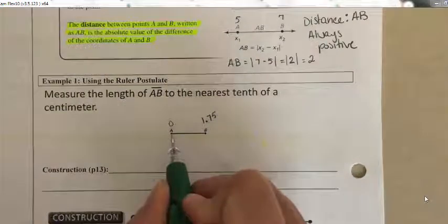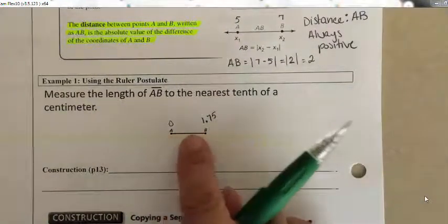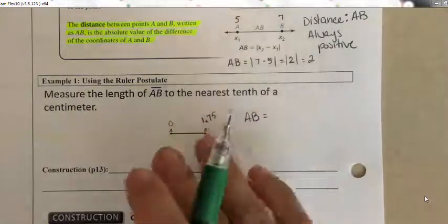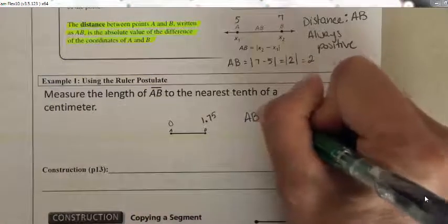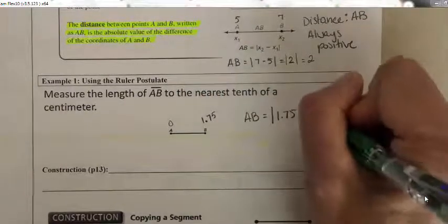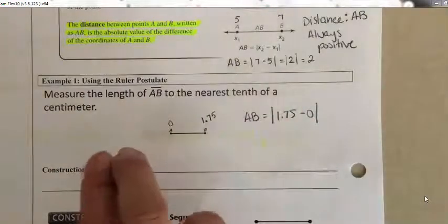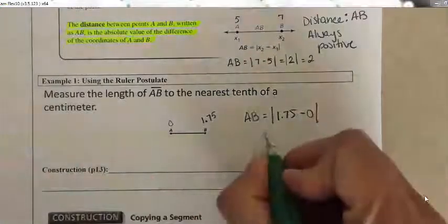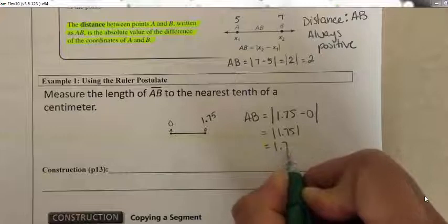I basically assigned numbers by lining my ruler up and asking what the length is. What you're really doing is taking the bigger number and subtracting the smaller number, then taking the absolute value — because if you were working with negative numbers you'd end up with a negative, but the length of things is always positive. So this is truly the absolute value of 1.75, or approximately 1.75 centimeters.